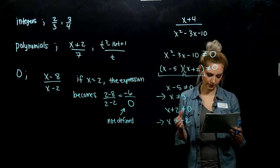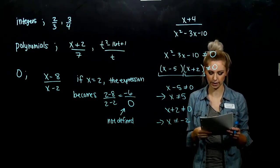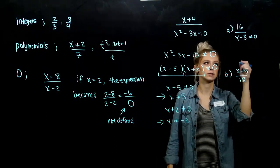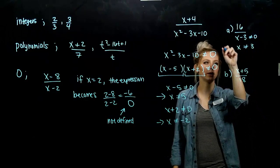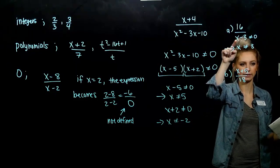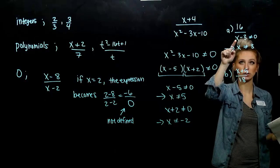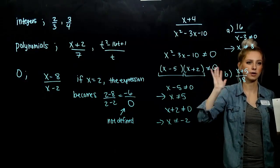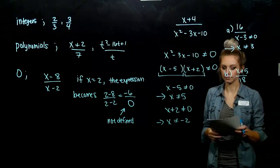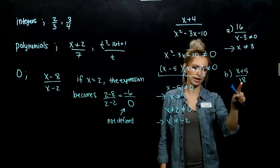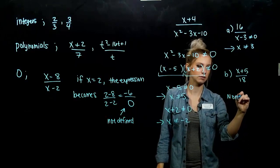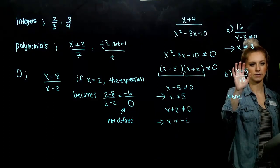Go ahead and take those next two — find all numbers for which the rational expressions are not defined. In the first one, the denominator cannot be equal to zero, so x cannot be 3. You can try other values: plugging in zero gives negative 3 in the denominator — that's legal; plugging in 2 gives negative 1. But once you hit 3, then 3 minus 3 is zero and the expression is undefined. For part B, I only ever have 18 in the denominator, which isn't zero, so there are no restrictions — I can plug in any number.